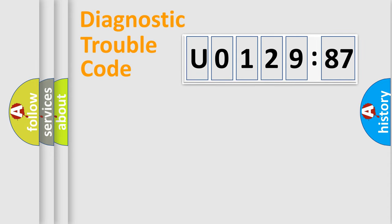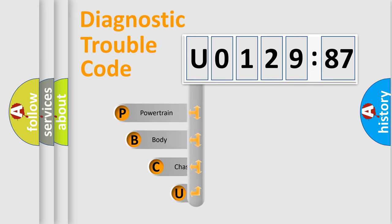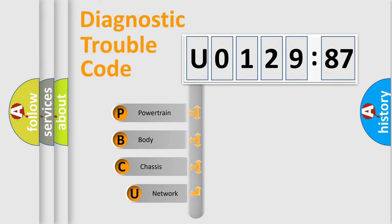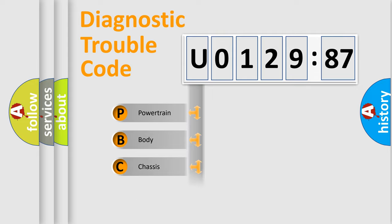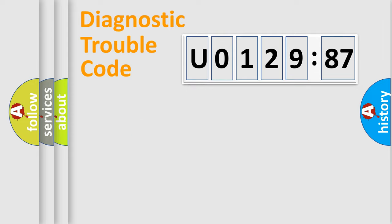Let's do this. First, let's look at the history of diagnostic fault code composition according to the OBD2 protocol, which is unified for all automakers since 2000. We divide the electric system of an automobile into four basic units: Powertrain, Body, Chassis, and Network.